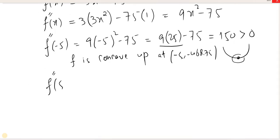Isi tarah, iske andar 5 put kar de. 9 times 5 square minus 75. Uspe bhi wahi answer aega, 150 which is positive. To 5, minus 468.75, iske upar bhi kya hoga, concave up hoga, means function is relative minimum.